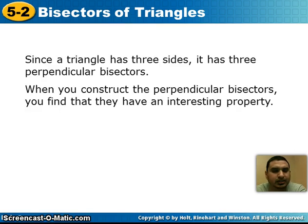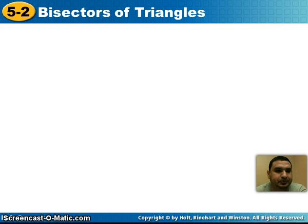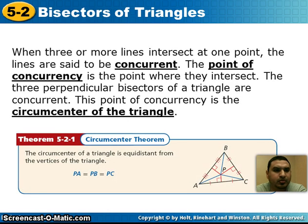Since a triangle has three sides, it's going to have three perpendicular bisectors. When you construct all three of those perpendicular bisectors, something unique happens. When three or more lines intersect at one point, the lines are said to be concurrent. The point of concurrency is the point where they intersect. The three perpendicular bisectors of a triangle are concurrent, and we call that point of concurrency the circumcenter of the triangle.